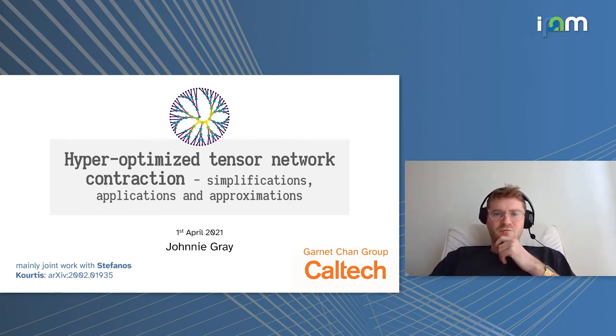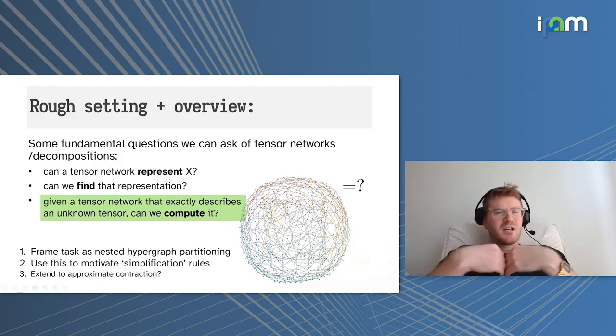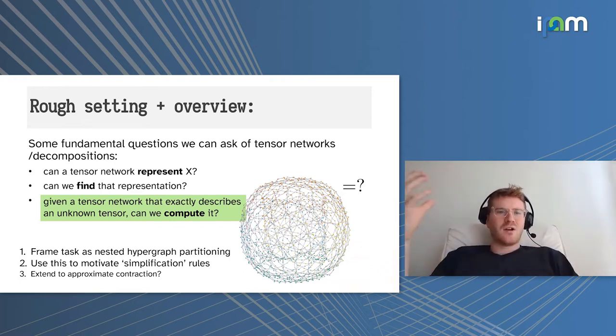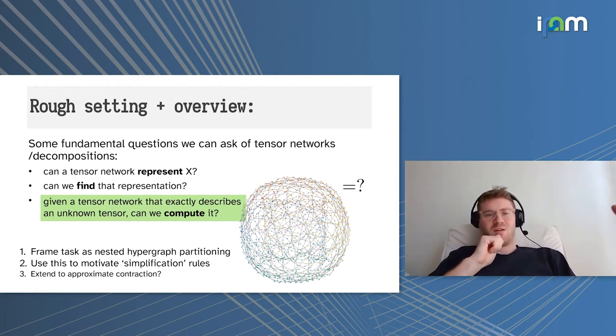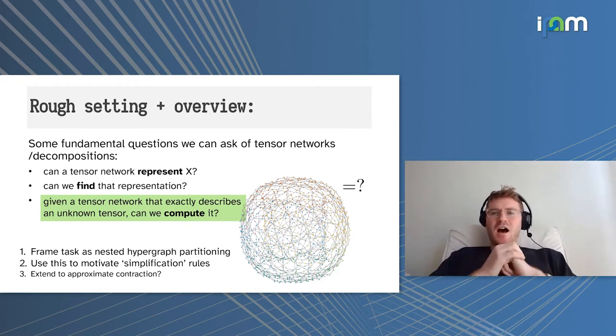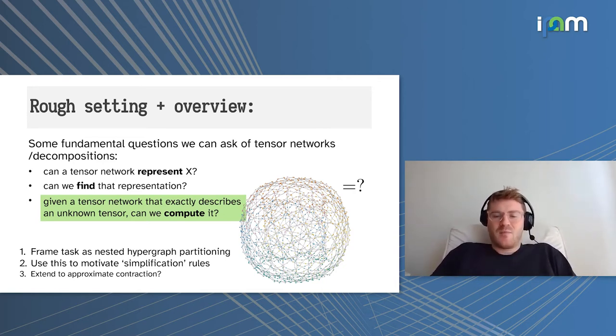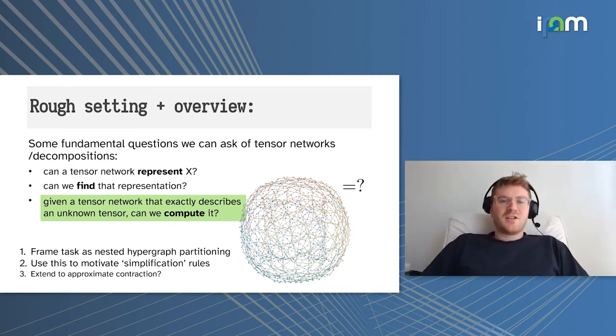Just to give a rough setting for this talk, there's a lot of fundamental questions we can ask about tensor networks and tensor decompositions that I think a lot of the other talks have covered. The basic one might be, can a particular tensor network represent this object X? And then a slightly more complex question might be, if we know it might be able to represent that object, how can we find that particular representation via optimization or other means?